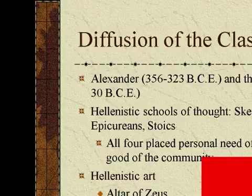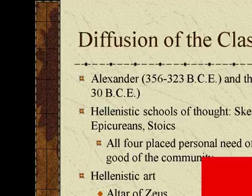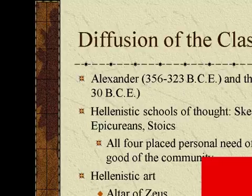Diffusion of the Classical Style. Alexander the Great (356–323 BCE) and the Hellenistic Age (323–30 BCE). Hellenistic schools of thought include the Skeptics, Cynics, Epicureans, and Stoics — all four schools.